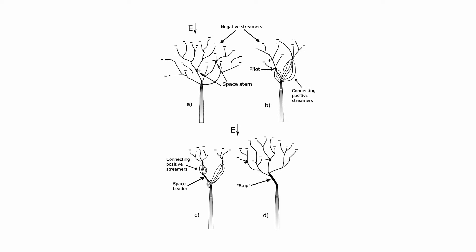Despite numerous laboratory experiments on the propagation of negative sparks, a definitive mechanism explaining the emergence of spatial stems in front of the head of the negative leader has not been established.